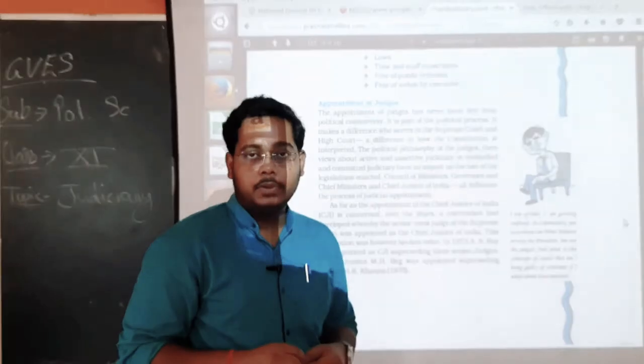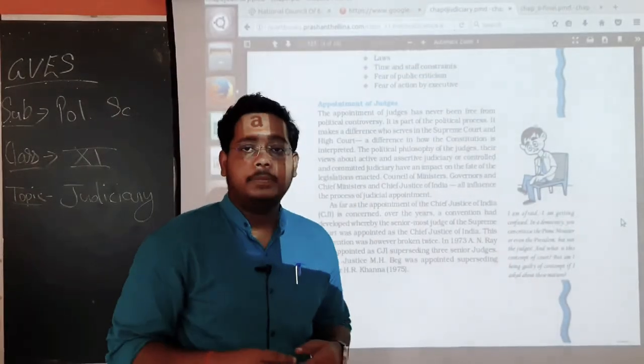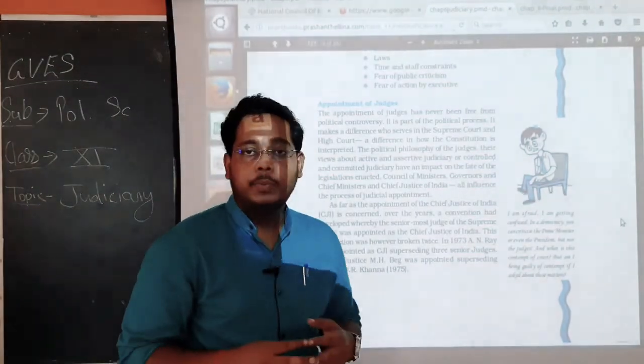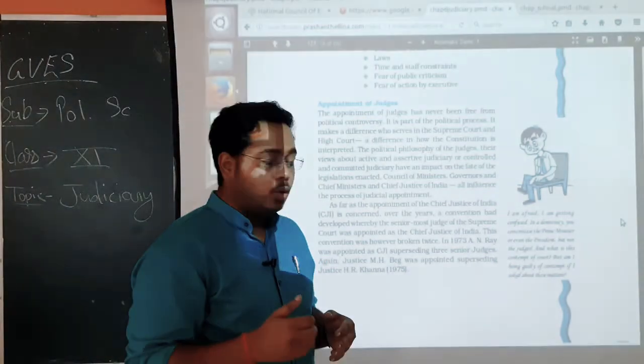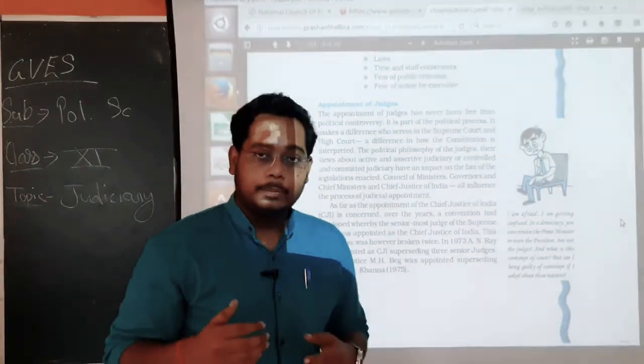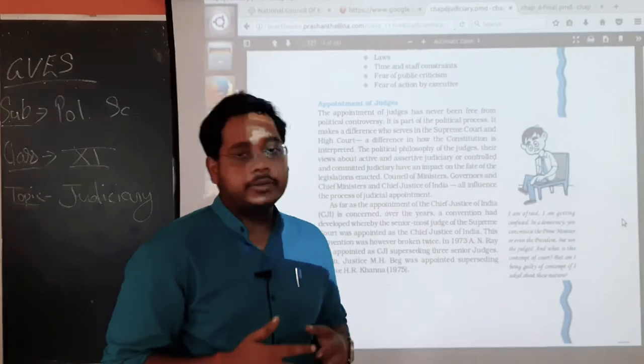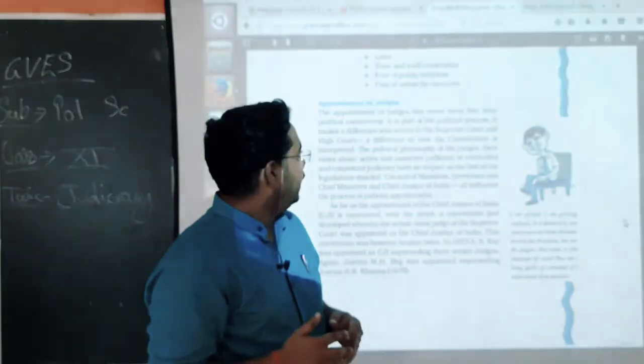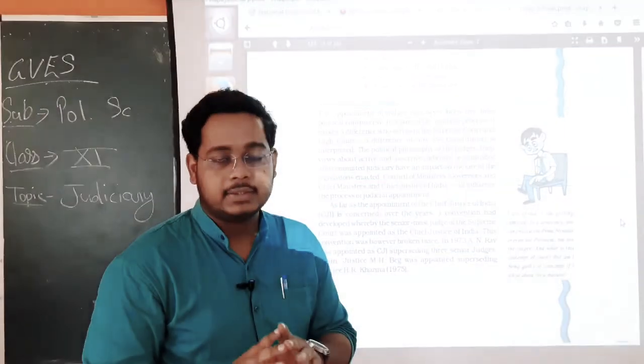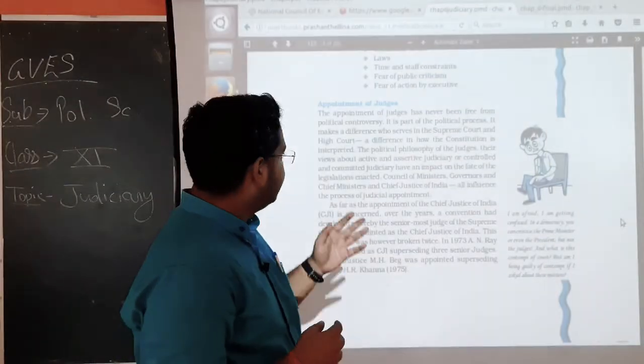I have already discussed with you people during online classes that some political party, the ruling government, they want to have those people to be in judiciary who actually favors the government, who always become positive to the government, who always supports the government through their decision, through their workings. But a lot of the time, since it is totally independent, the judges who are not favoring the government, they create the political wing, create some kind of controversy with them, when they try to impeach them forcefully.